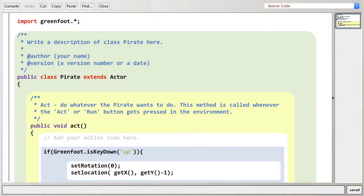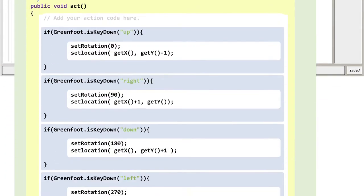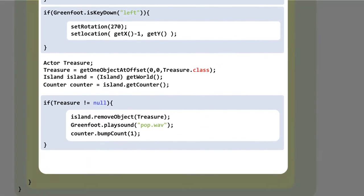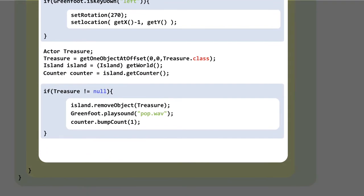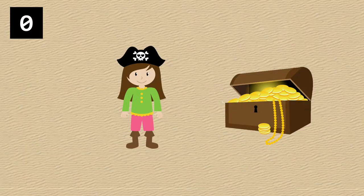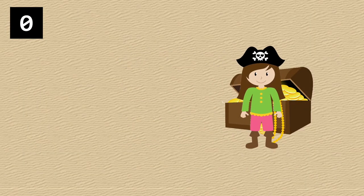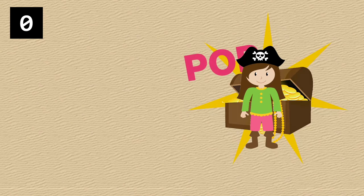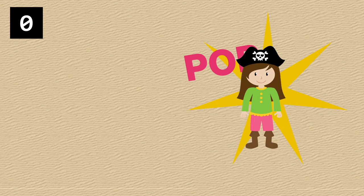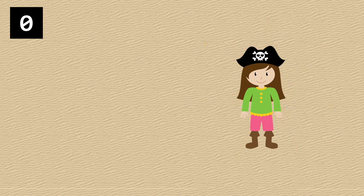So into our pirate code we go. Let's think this through. We want our pirate to collide with the treasure. The chest should pop and disappear, the score should increment by one, and then we want to tell the treasure to reappear.